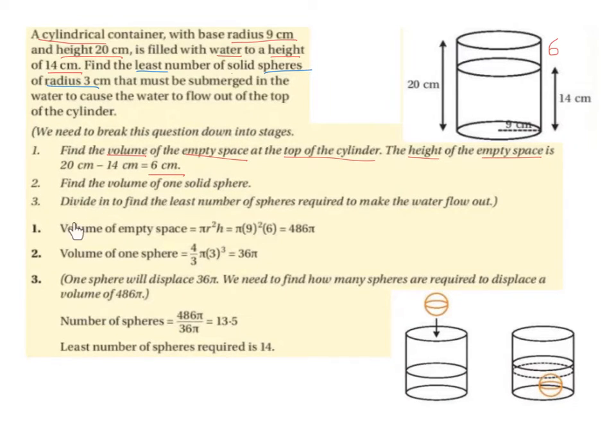The volume of the empty space is going to be π r squared h, because remember the empty space is in the shape of a cylinder. And the radius is still 9, and the height of this empty space is 6. So we have π times 9 squared times 6, which is 486π. The volume of the empty space at the top is 486π.